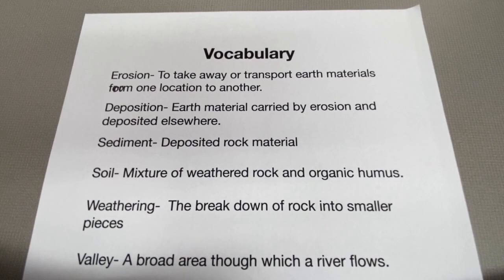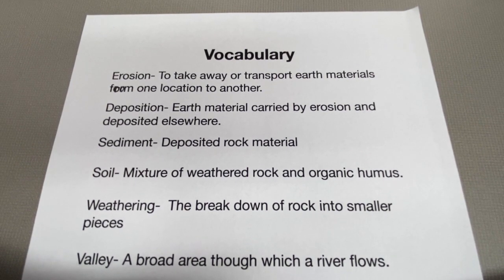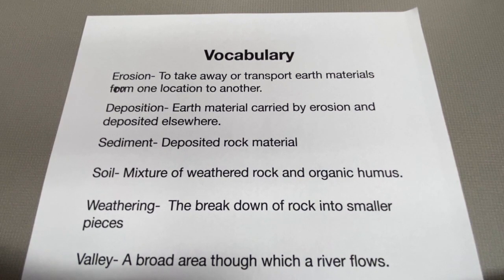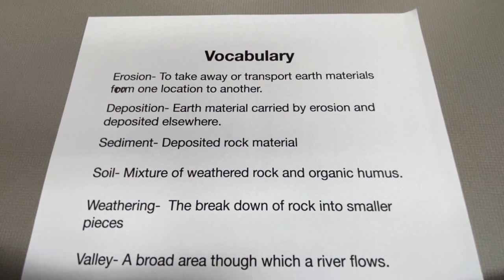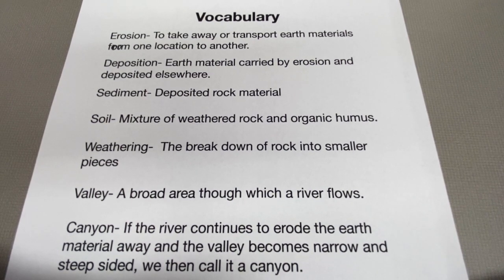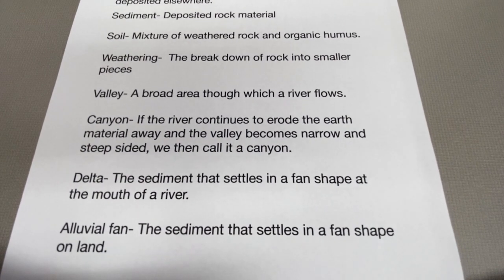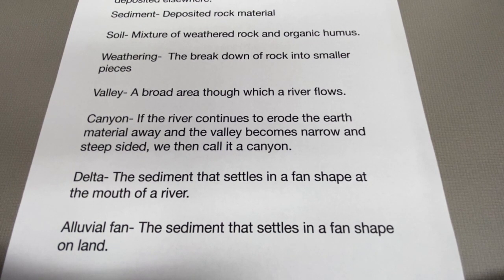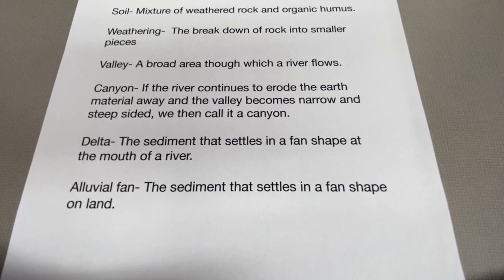Let's go over our vocabulary words for this investigation. Erosion: to take away or transport earth materials from one location to another. Deposition: earth material carried by erosion and deposited elsewhere. Sediment: deposited rock material. Soil: mixture of weathered rock and organic humus. Weathering: the breakdown of rock into smaller pieces. Valley: a broad area through which a river flows. Canyon: if the river continues to erode the earth material away and the valley becomes narrow and steep-sided, we call it a canyon. Delta: the sediment that settles in a fan shape at the mouth of a river. Alluvial fan: the sediment that settles in a fan shape on land.